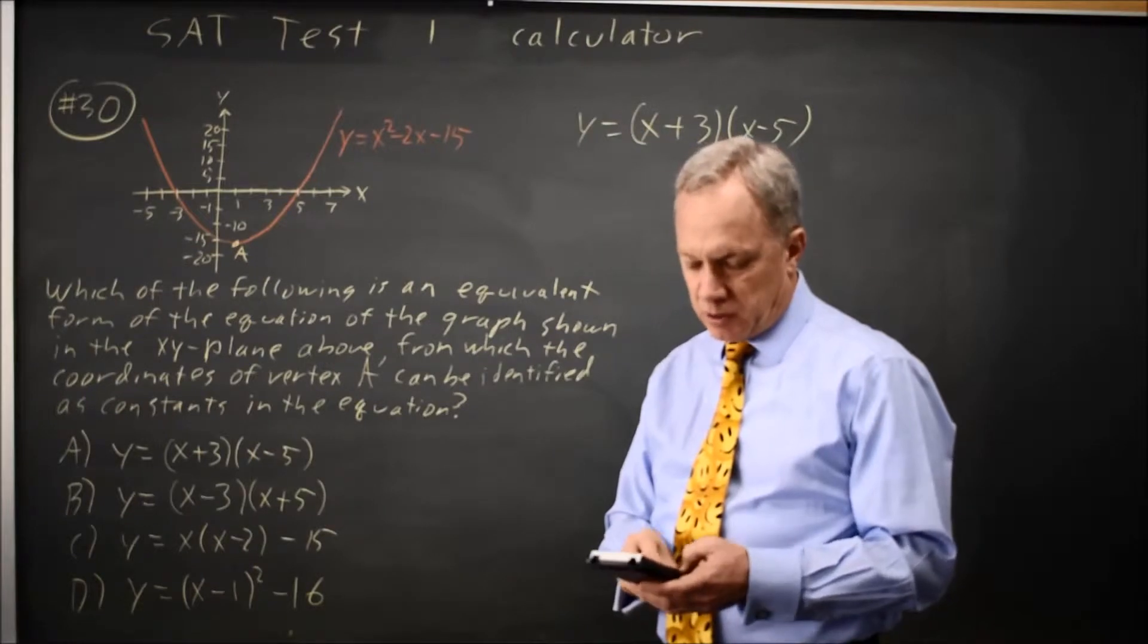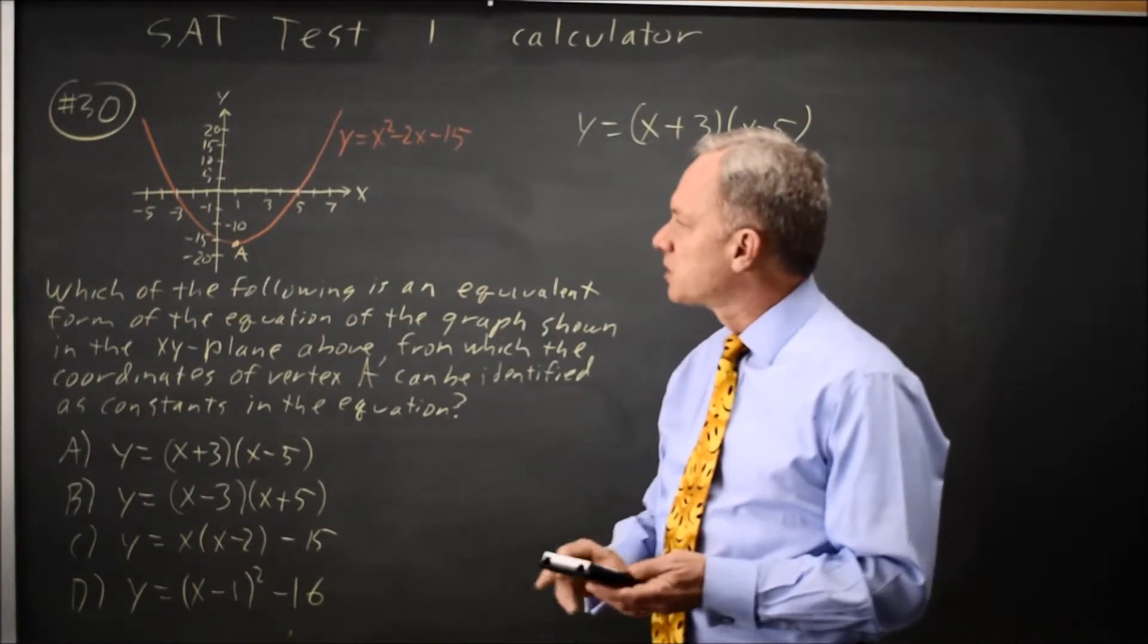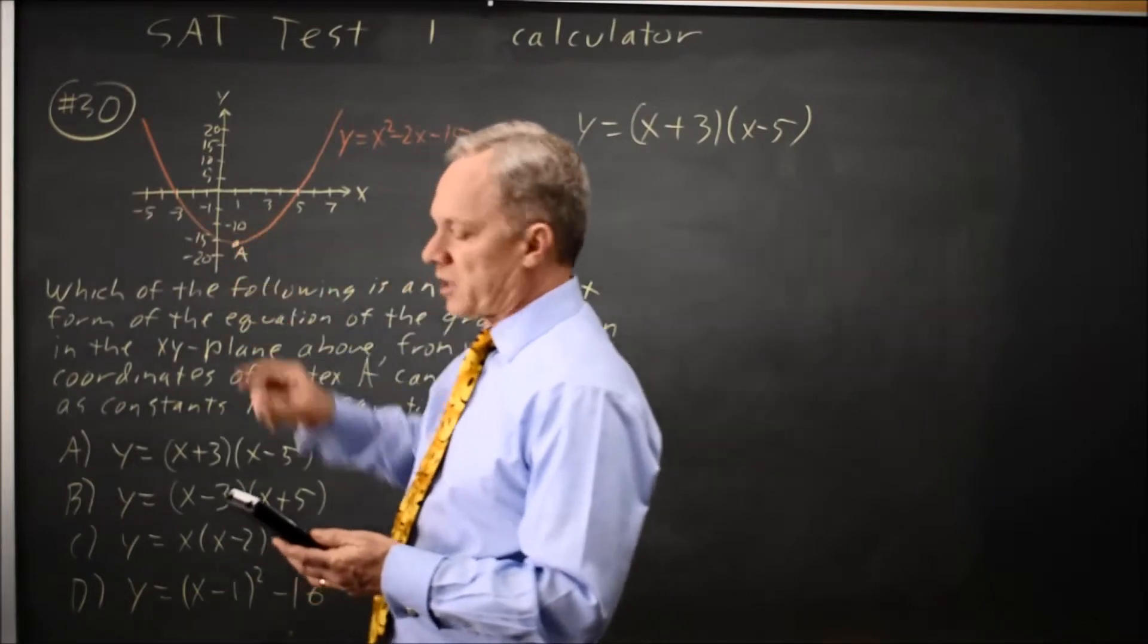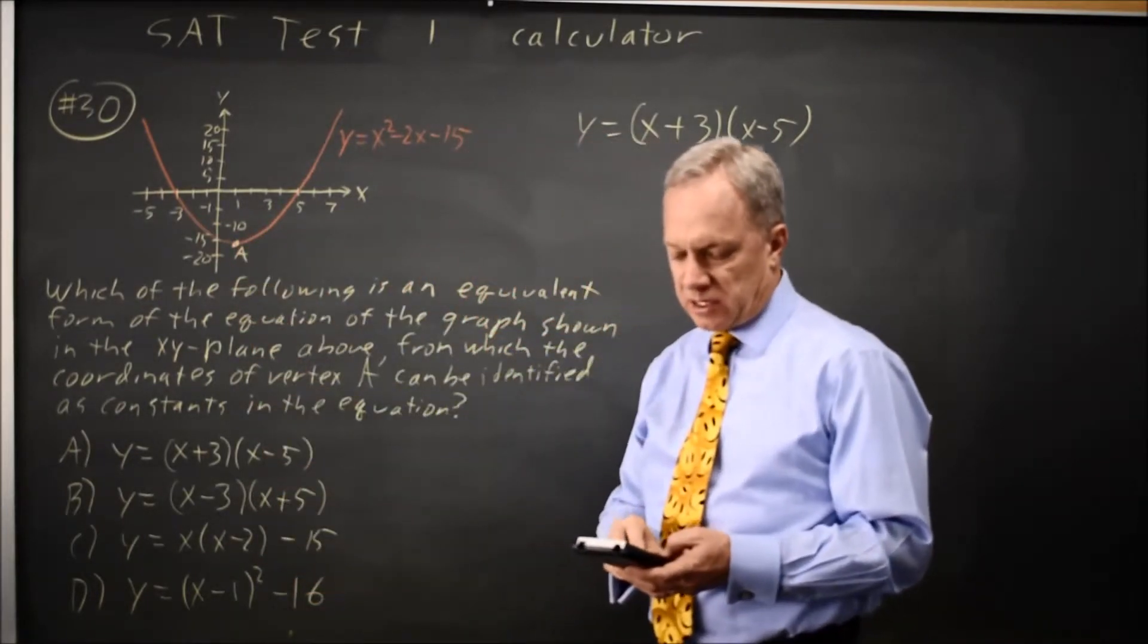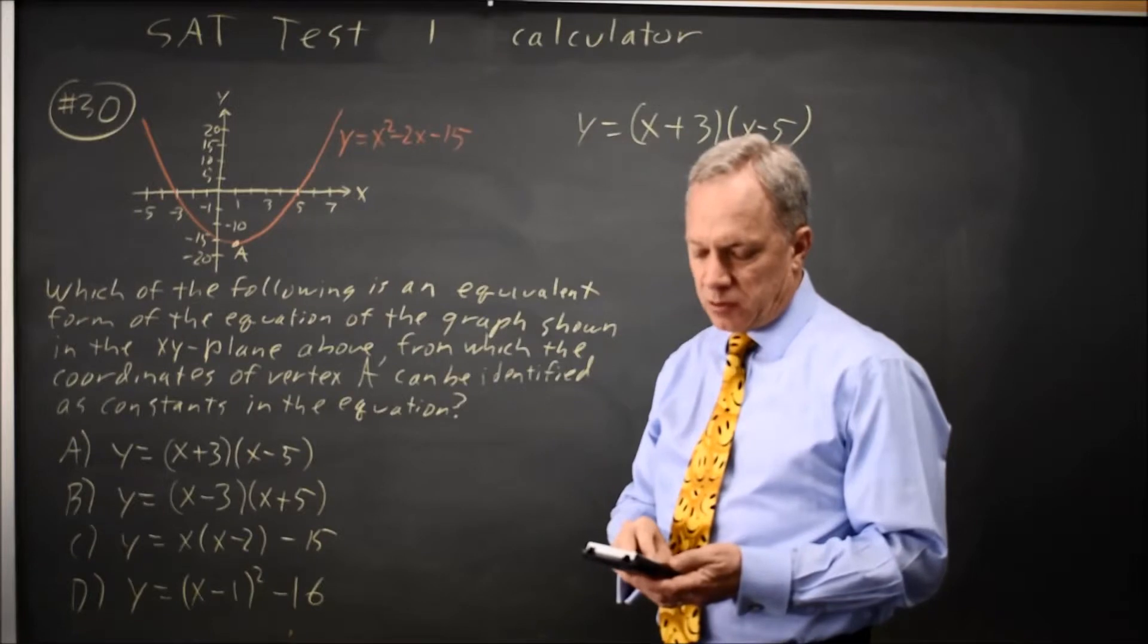Second calc, choice 3 is the minimum between negative 5 and positive 5 because the vertex is clearly between negative 5 and 5. I'll just go with the default, and I get x equals 1.